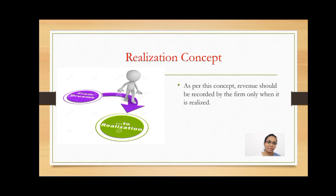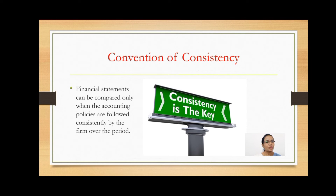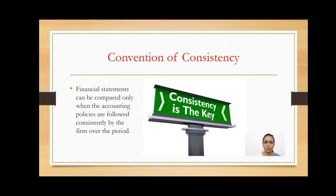Moving towards the conventions of accounting, the first is the Convention of Consistency. According to this convention, financial statements can be compared only when the accounting policies are followed consistently by the firm over the period. Financial statements should be prepared on the same basis as that of the preceding period, so whatever may be the accounting policies or methods, once decided, these are to be followed consistently.